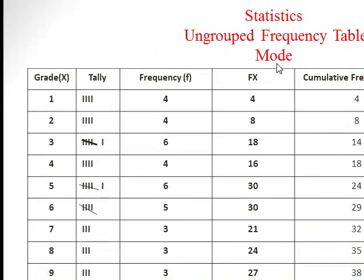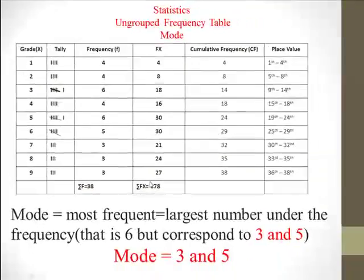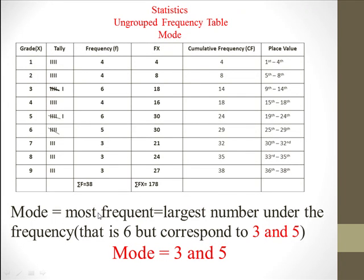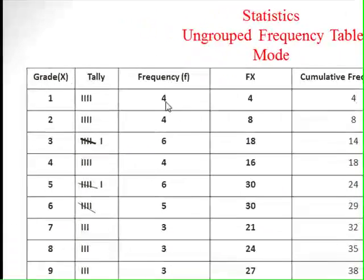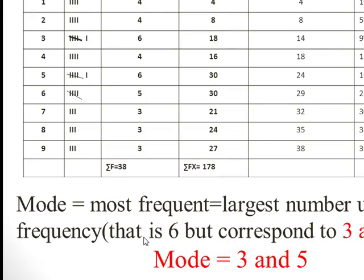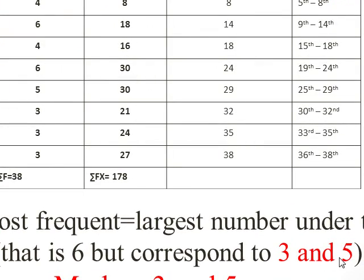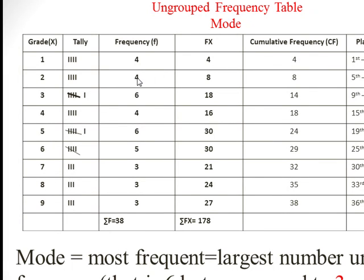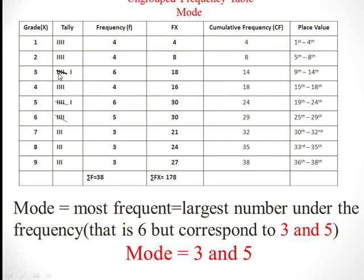For the mode, which is the most frequent value: find the largest number under the frequency column, which is 6. However, 6 appears two times — once corresponding to grade 3 and once to grade 5. Because the frequency 6 occurs twice, we look at both corresponding grades, which are 3 and 5. So the mode is 3 and 5.